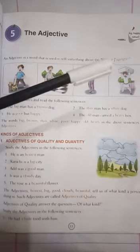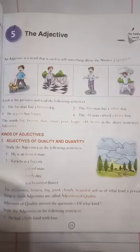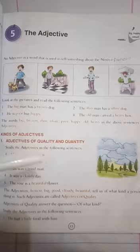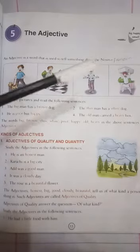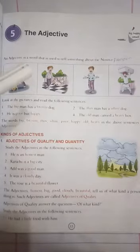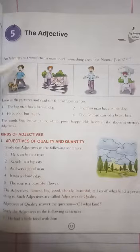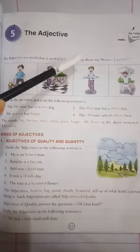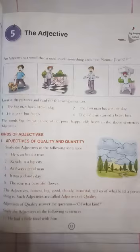What are nouns and what are pronouns? Nouns are words used to name something — the name of any person, place, or idea. Pronouns are used instead of nouns to avoid the repetition of the same noun again and again. Now, adjectives are basically words used to tell something about the noun and pronoun.